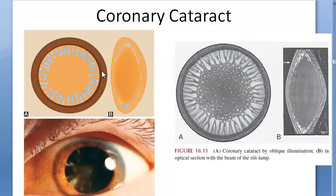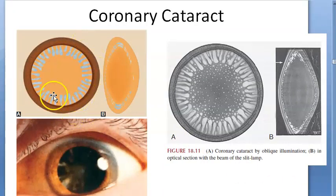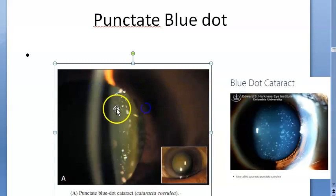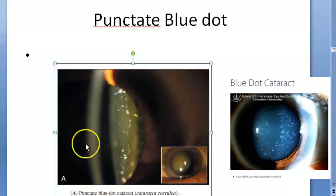This here is coronary cataract — the shape resembles a corona. And here they are showing blue dot cataract. Vision is not affected much in blue dot cataract because the bluish dots are situated here and there, mostly in the peripheral part of the adolescent nucleus and deeper part of the cortex.